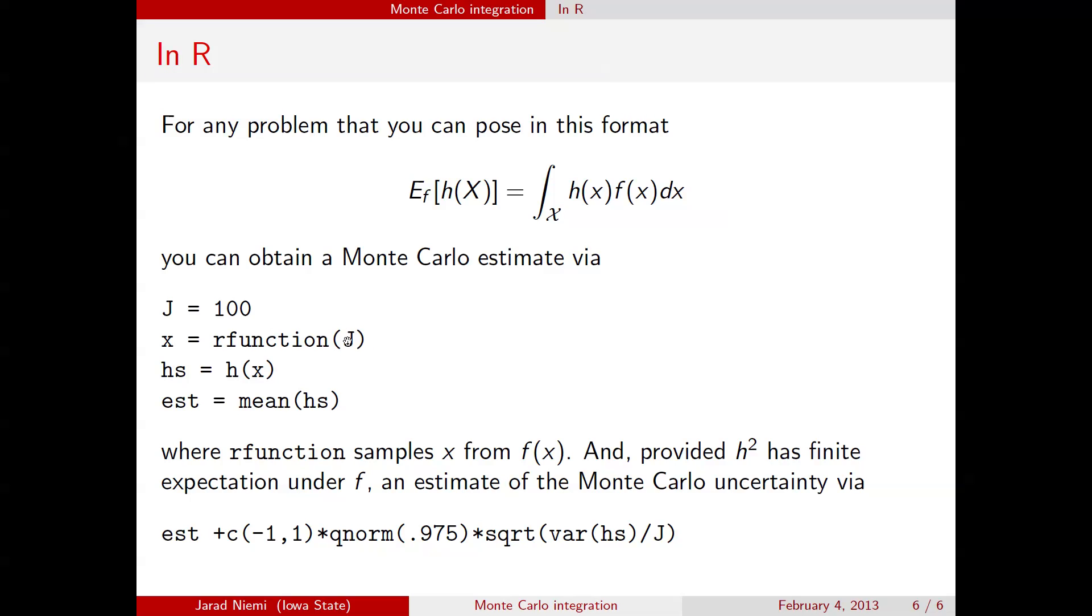So we sample 100 values from f, calculate h for all those values, and we can get an estimate by taking the mean of those values. And now, if we wanted the Monte Carlo uncertainty, we could go ahead and compute that. Here we have the estimate, plus or minus a value. This is for now a 95% interval, where the standard deviation can be multiplied by the square root of the empirical variance of h, divided by the number of samples we've taken.